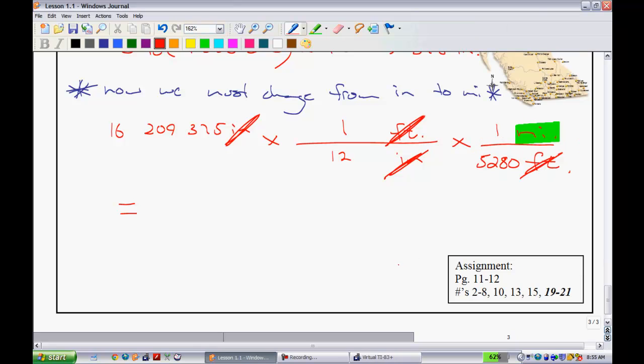Now we get to divide by 5,280. And our answer we get is approximately 255.8297822, and so on.